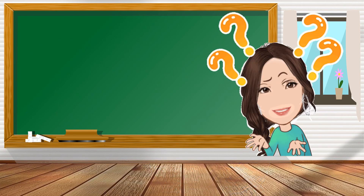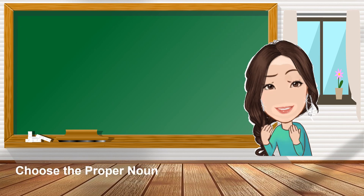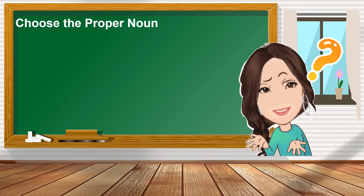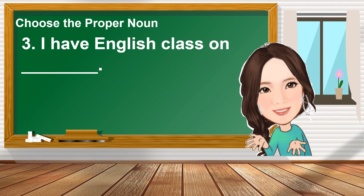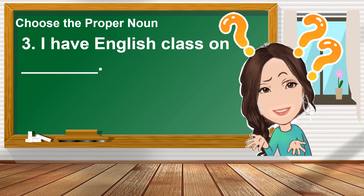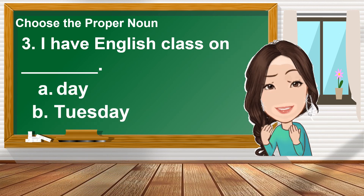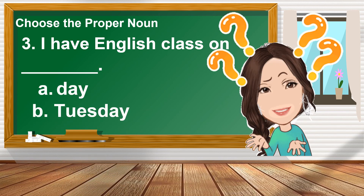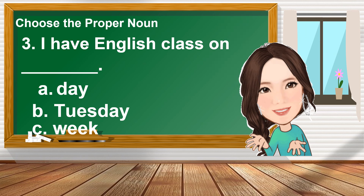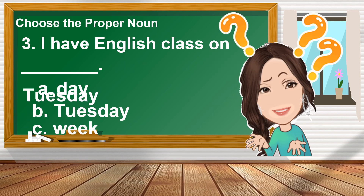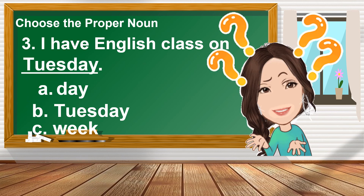Number three: choose the proper noun. I have English class on blank. A. Day. B. Tuesday. C. Week. What is the proper noun? The answer is letter B — Tuesday.